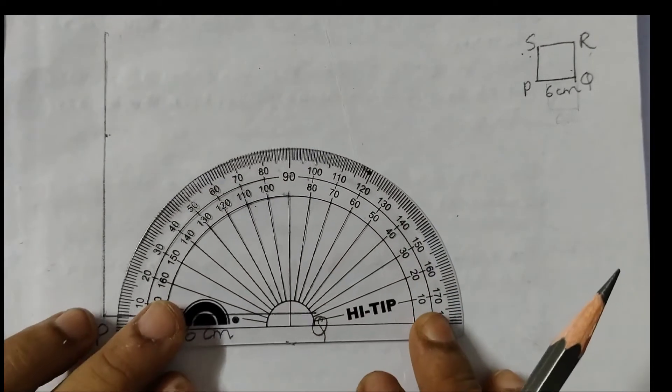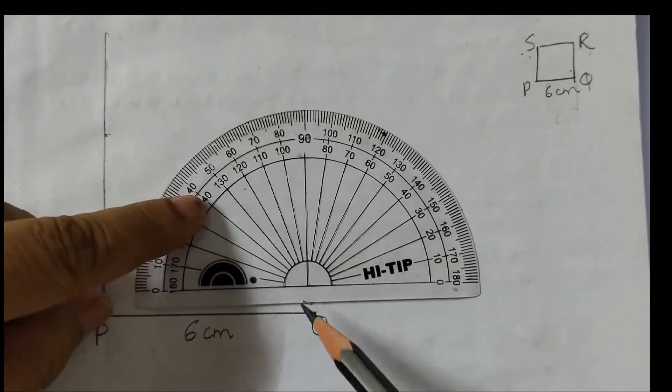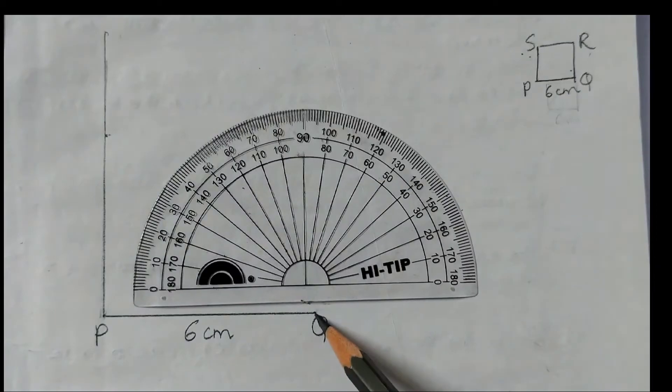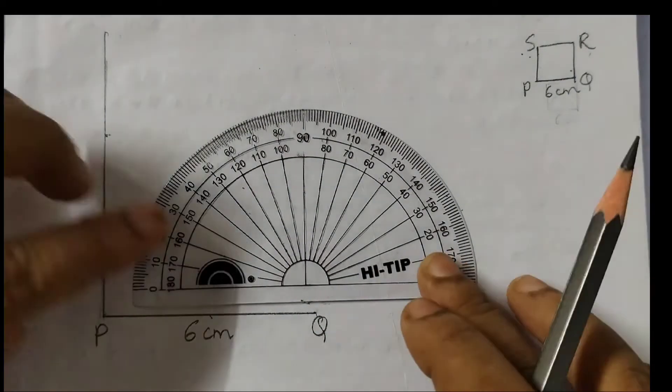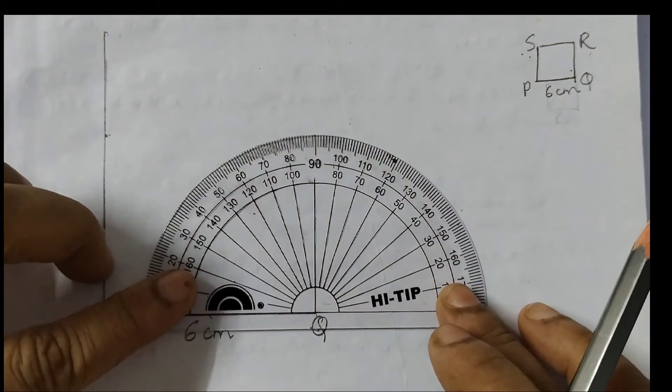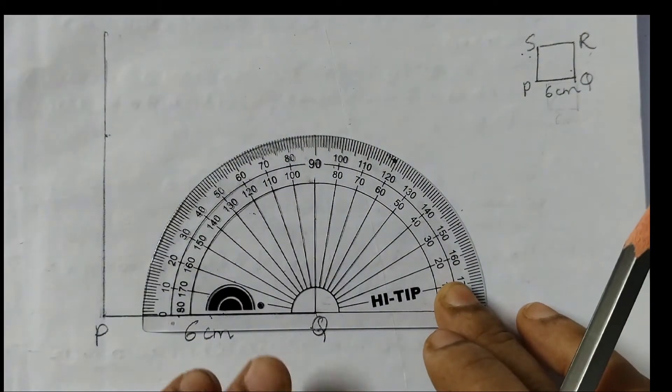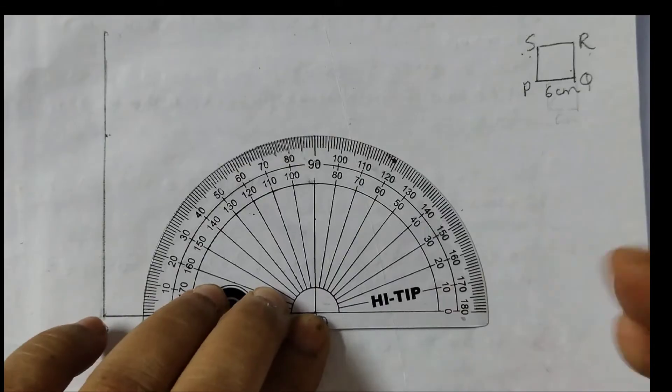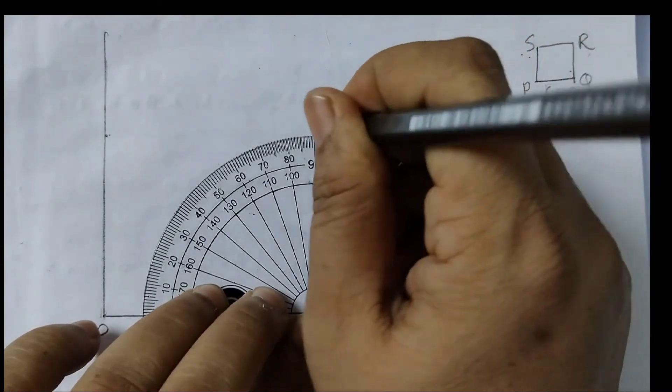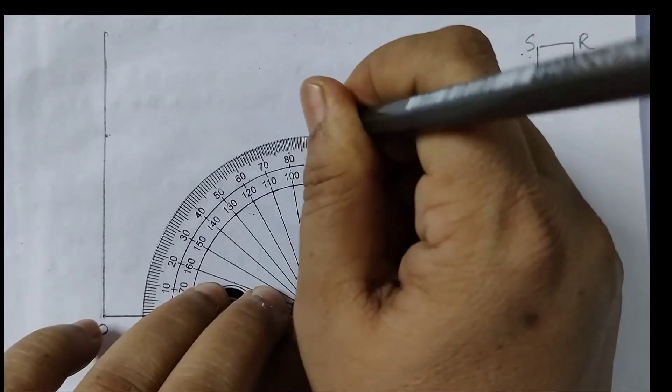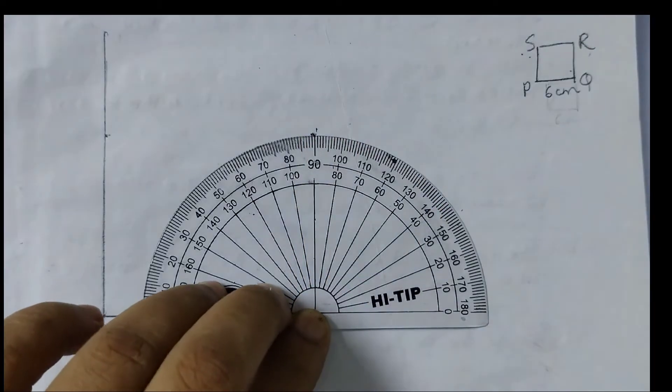Now take the protractor and place the point. This point to be placed here at this point. Okay, and this line would be on this line. Done. Now mark the point 90 degrees here. That is 90 degrees angle. So what we are doing is we are drawing a perpendicular passing through P and Q.